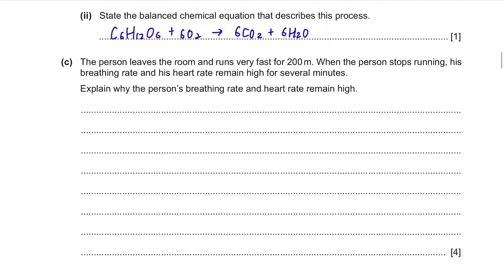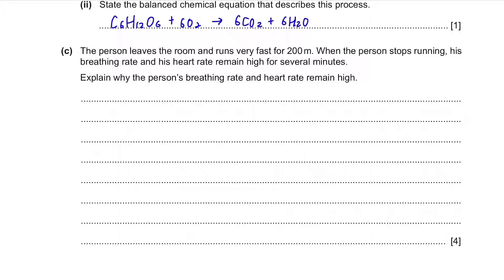Part C: the person leaves the room and runs very fast for 200m. When the person stops running, their breathing rate and heart rate remain high for several minutes — explain why. That is because of oxygen debt. Before, when running, the body needed extra energy so anaerobic respiration occurred. Anaerobic respiration is the method of producing energy without using oxygen, but you have to pay back for it afterwards. When the person stops running, time is needed for the oxygen debt to be repaid, and as a result more oxygen is needed than usual.